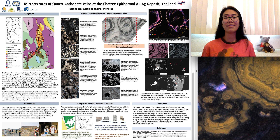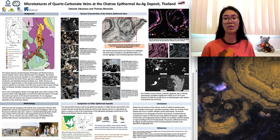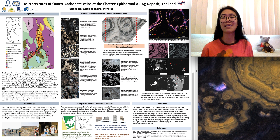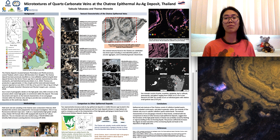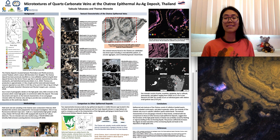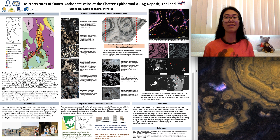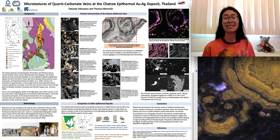In comparison to other representative Bonanza-style epithermal gold-silver deposits elsewhere, such as Buckskin National and Fire Creek deposits in Northern Nevada and the Hishikari in Japan, the vein textures found in the Sha3 are mostly identical to those found in other deposits, except for the shear-induced deformed features found only at Sha3.